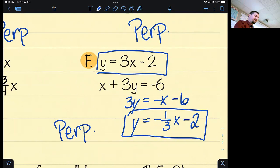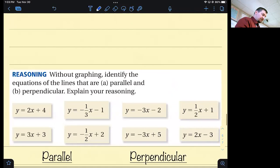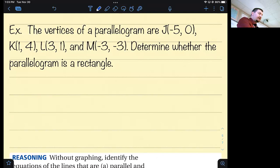The vertices of a parallelogram are J(-5, 0), K(1, 4), L(3, 1), and M(-3, -3). Determine whether the parallelogram is a rectangle. Last time we had a quadrilateral and determined if it was a parallelogram. This time we have a parallelogram and need to determine if it's a rectangle. Rectangles have right angles. So instead of looking at opposite sides to see if they're parallel, I know they already are. What I'm going to do is look at the adjacent sides, the two that are connected, to see if they're perpendicular.